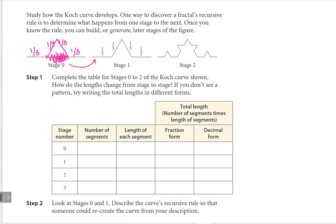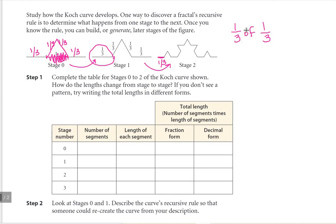Moving on to stage two, we use that same recursive procedure to get from stage one to stage two. Each of these segments would become one third of the previous segment. So we're going to take one third of one third. What operation does 'of' always mean in math language? It means multiplication.